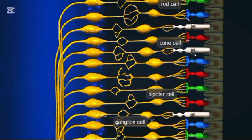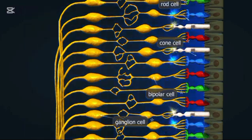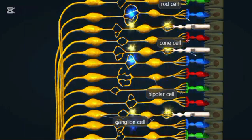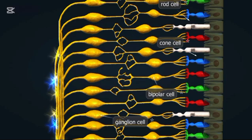The blind spot, or scotoma, is a small area on the retina where the optic nerve connects to the eye. The optic nerve is a bundle of nerve fibers that carries visual information from the retina to the brain.